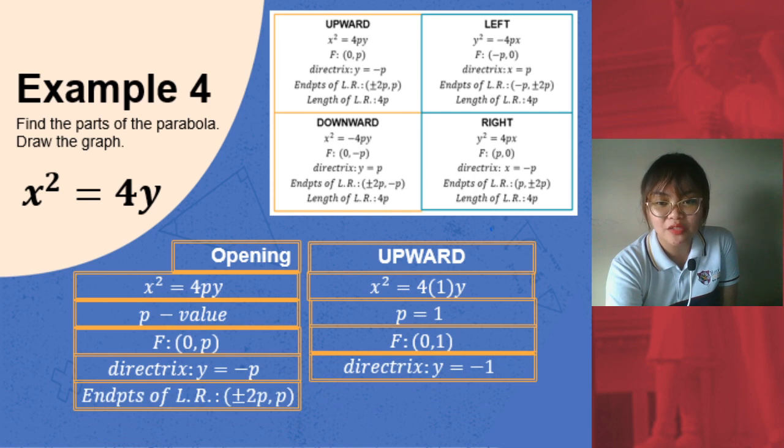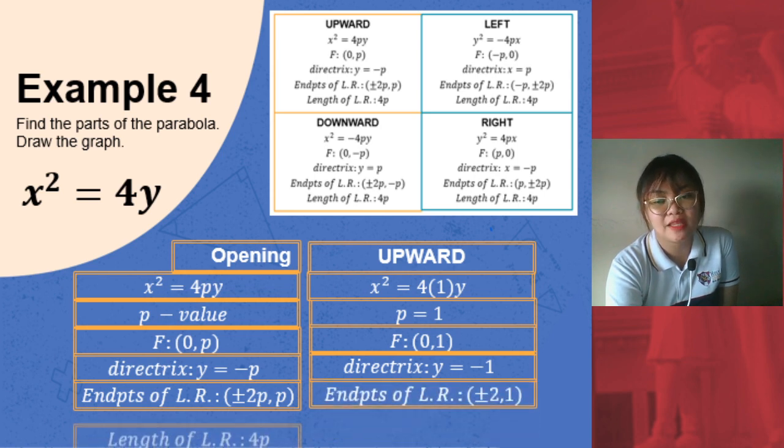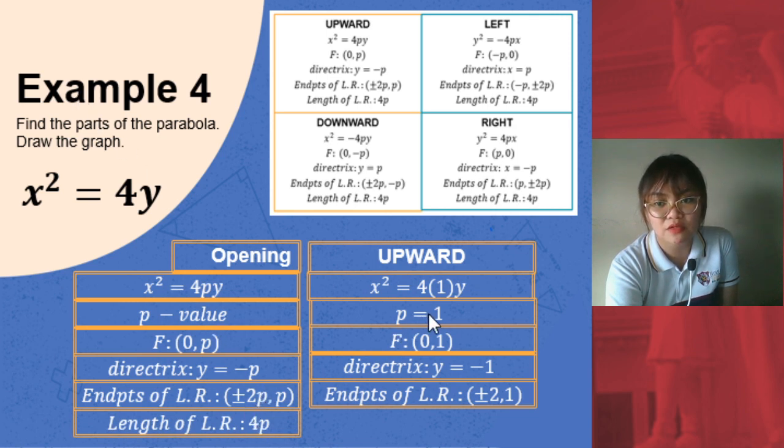Endpoints of the latus rectum: positive, negative 2p, p. Substitute the value of p and you'll get positive, negative 2, 1. And then length of the latus rectum is always 4p. Substitute the value of 1 to p. And the length of your latus rectum here would be 4 units.